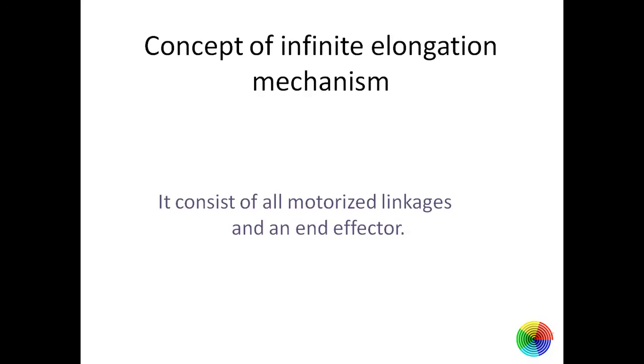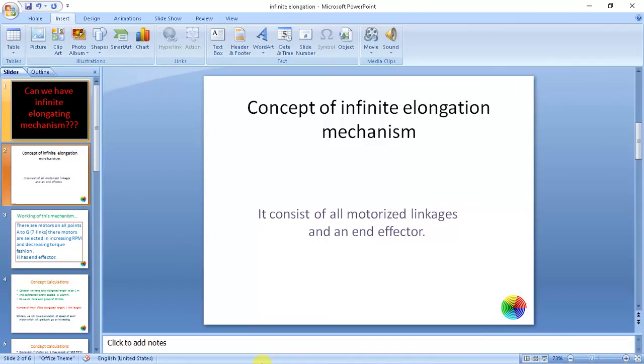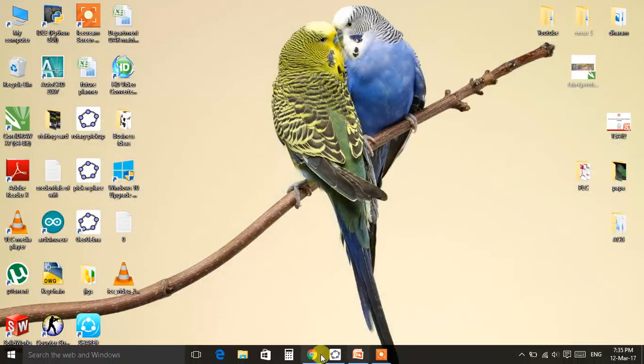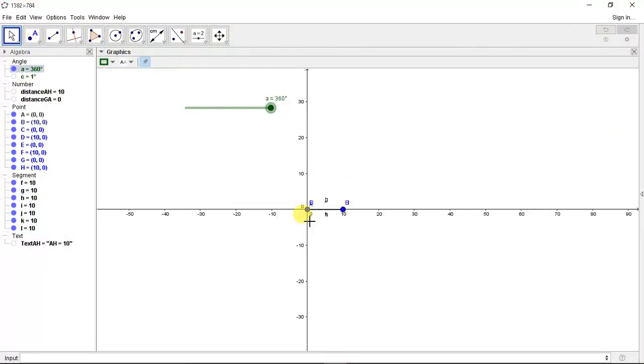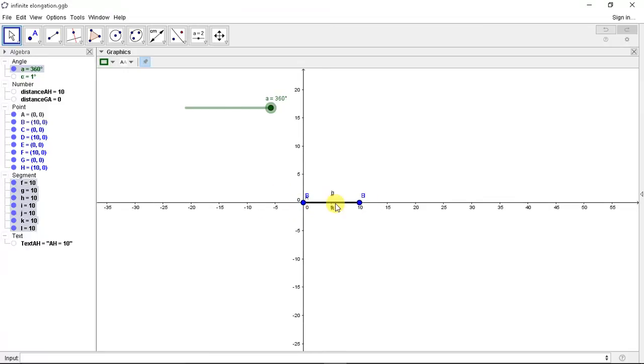Let's first see the basic concept visually and then go in depth. Consider there are seven links, one above the other, and each link has a motor.